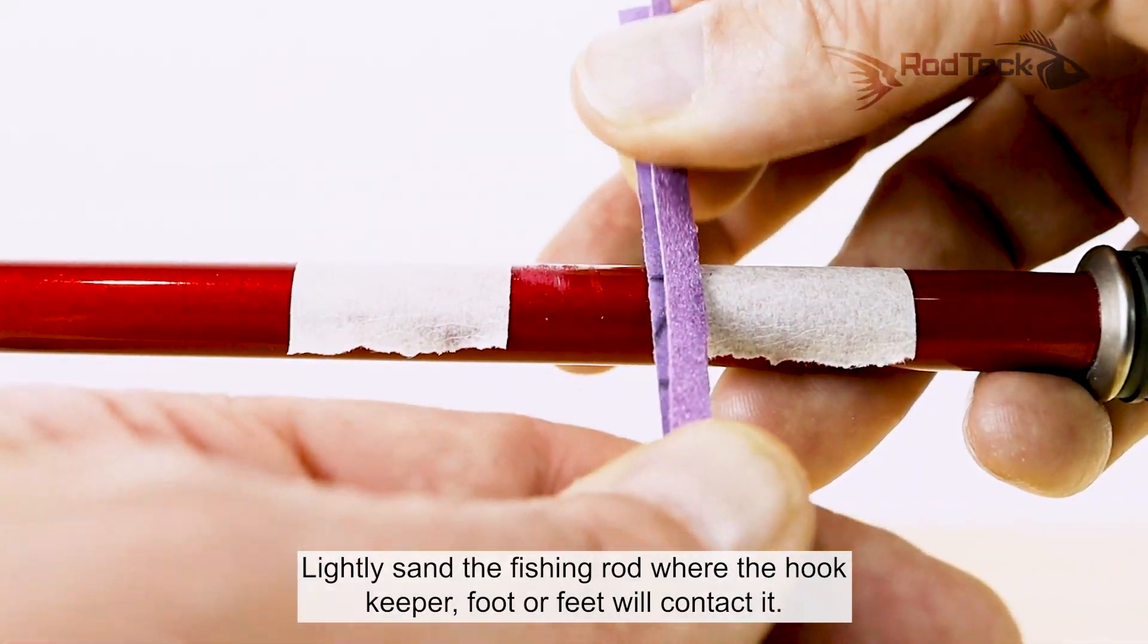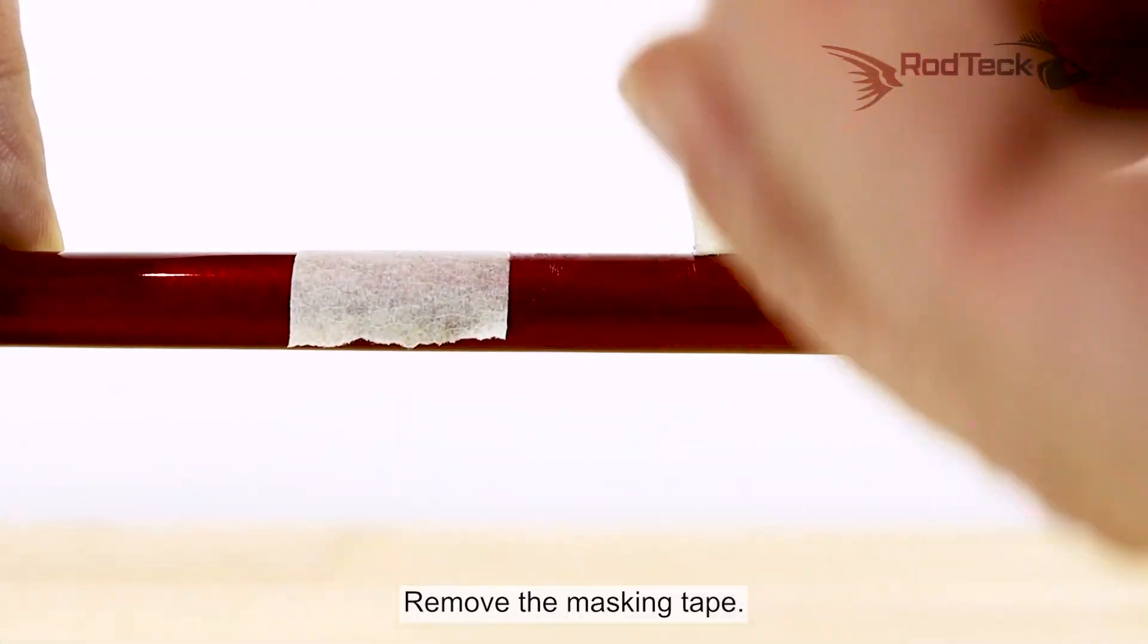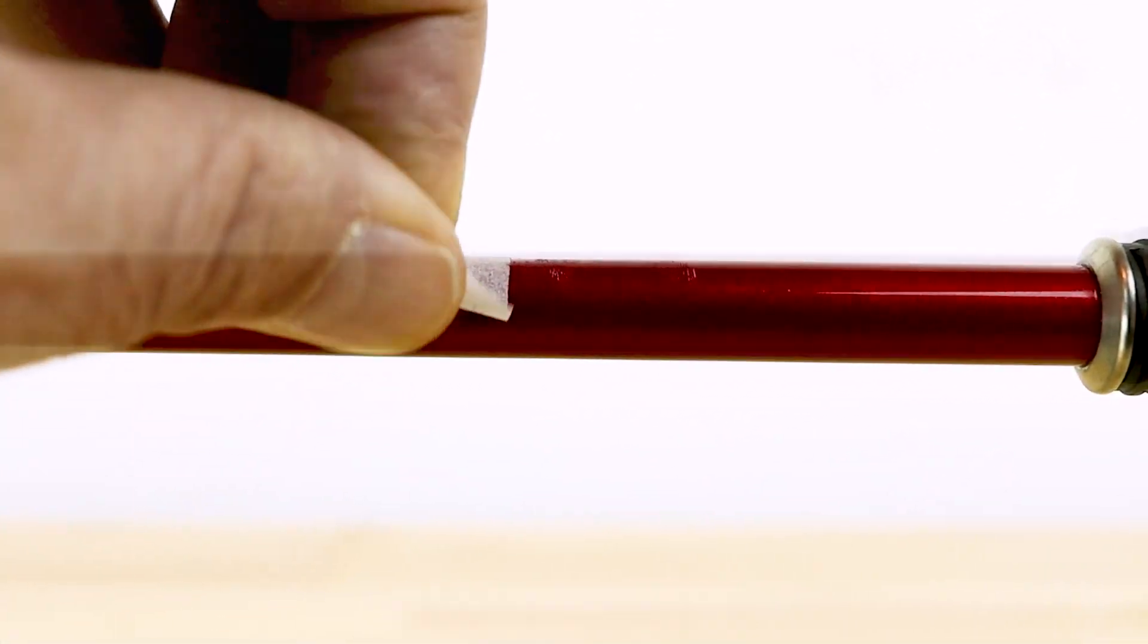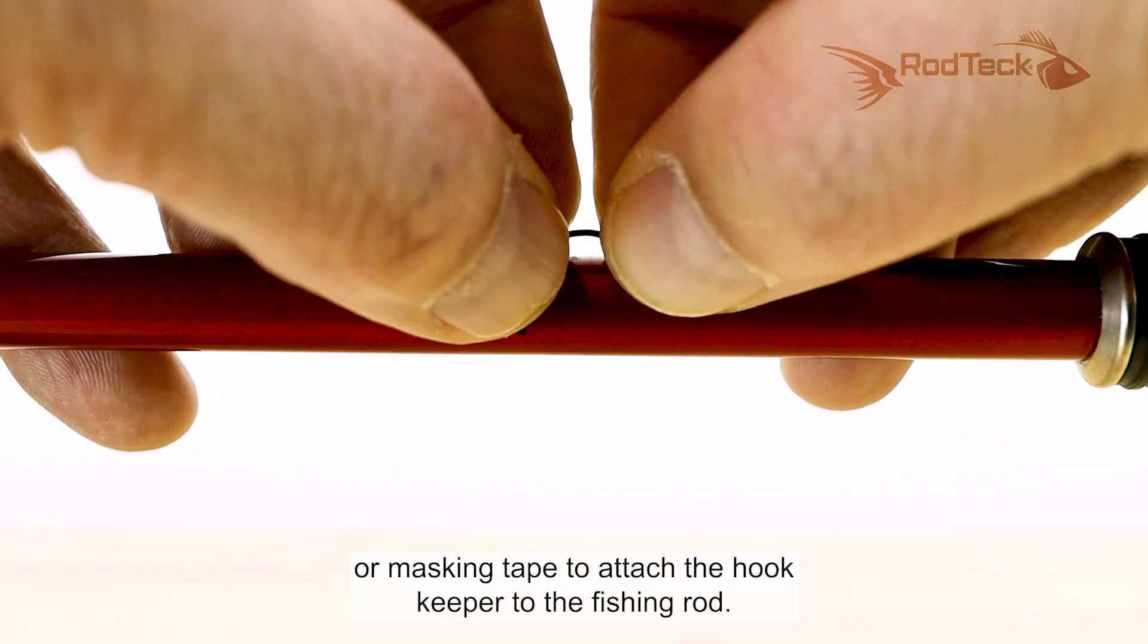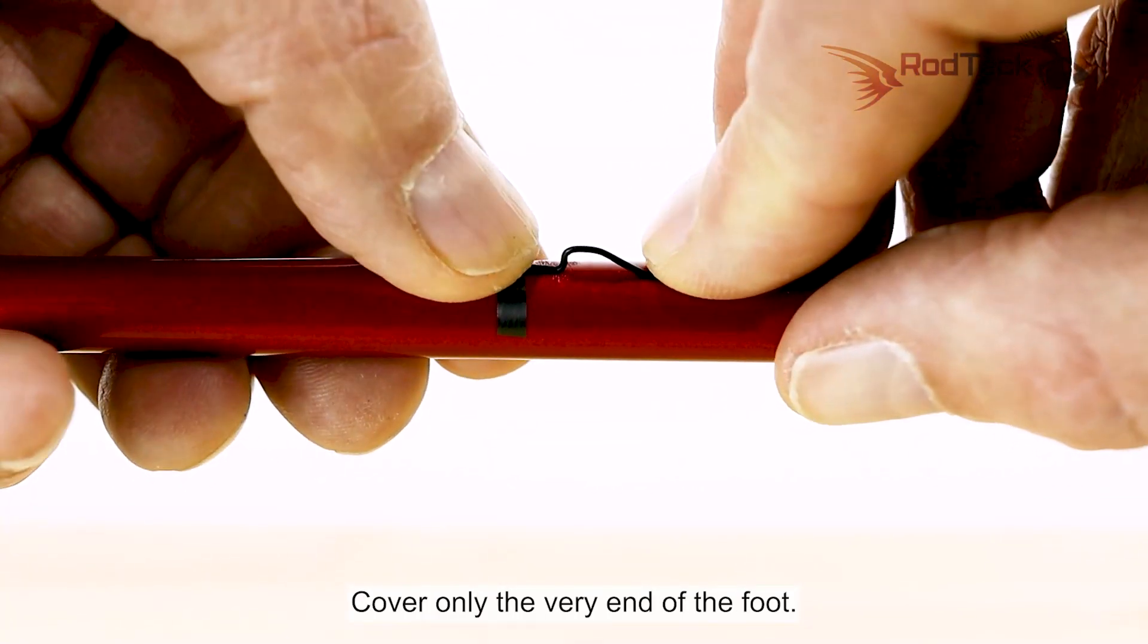Lightly sand the fishing rod where the hook keeper foot or feet will contact it. Use a piece of sea tape or masking tape to attach the hook keeper to the fishing rod. Cover only the very end of the foot.